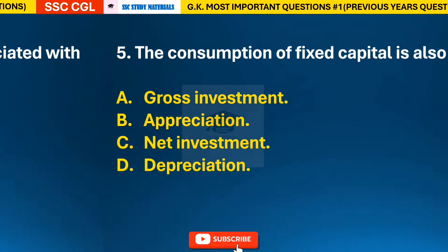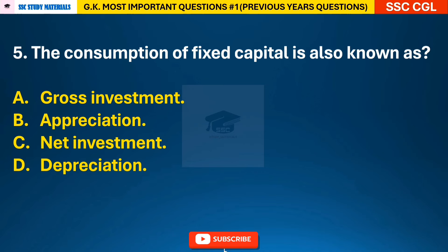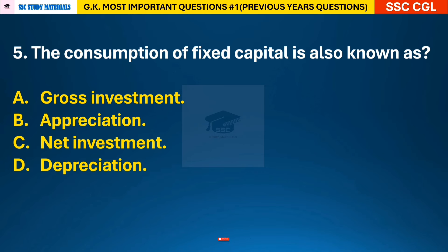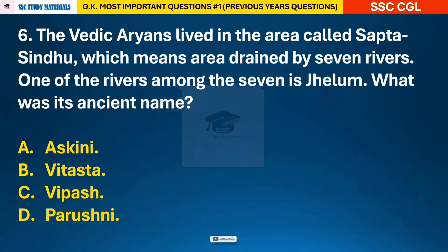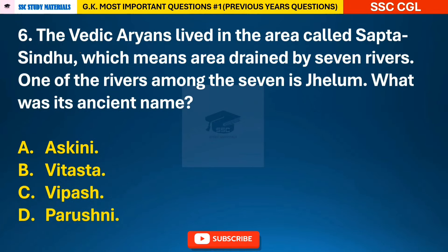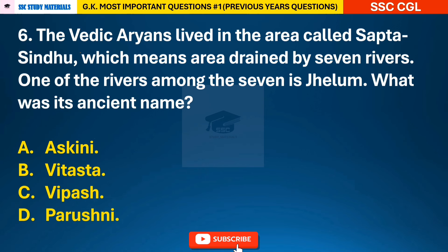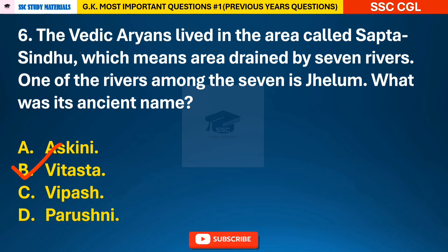Question 5: The consumption of fixed capital is also known as? Question 6: The Vedic Aryans lived in the area called Sapta Sindhu, which means the area drained by seven rivers. One of the rivers among the seven is Jhelum. What was its ancient name? — answer B: the ancient name of Jhelum was Vitasta.